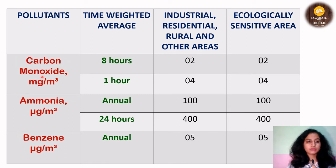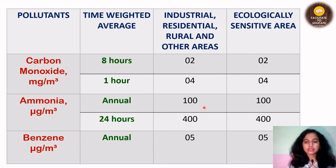Next are carbon monoxide, ammonia, and benzene. For carbon monoxide, the unit is different — it is measured in milligram per meter cube — and it is measured for 8 hours and for 1 hour, with standards of 2 and 4 respectively. For ammonia, the unit is microgram per meter cube; annually it is 100 and for 24 hours it is 400. For benzene, measurement is taken only annually, and it is 5 microgram per meter cube for both area types.